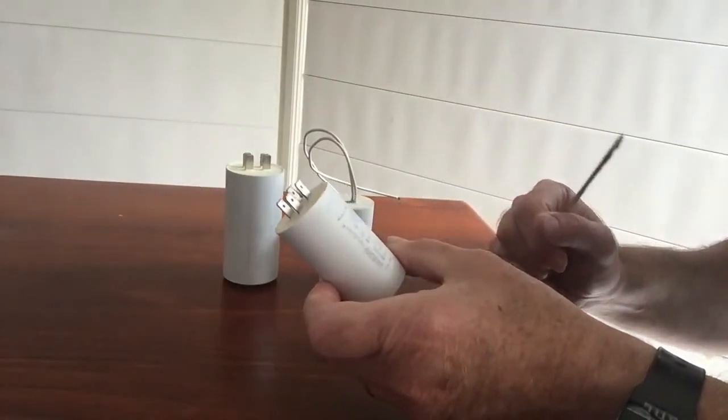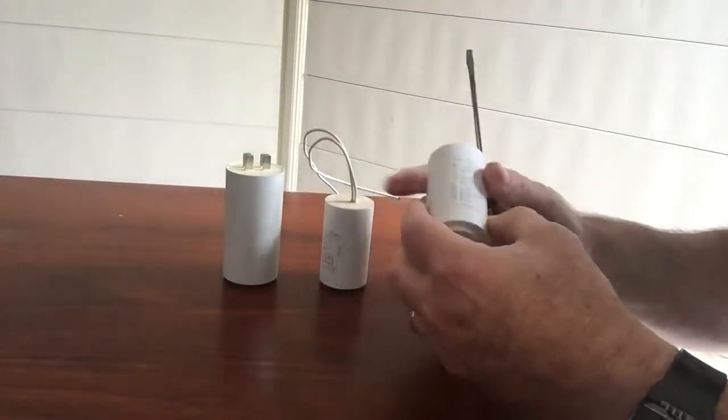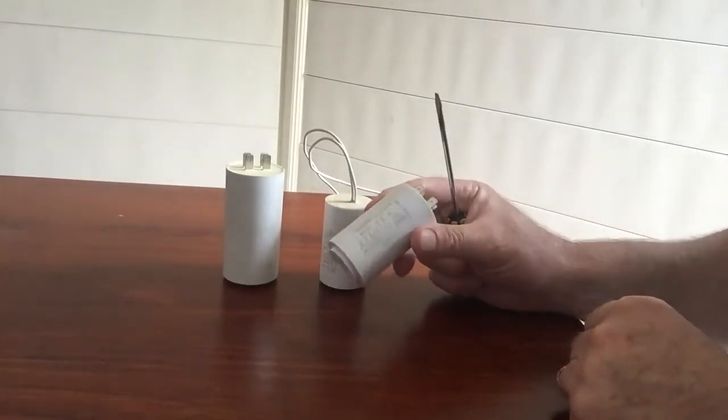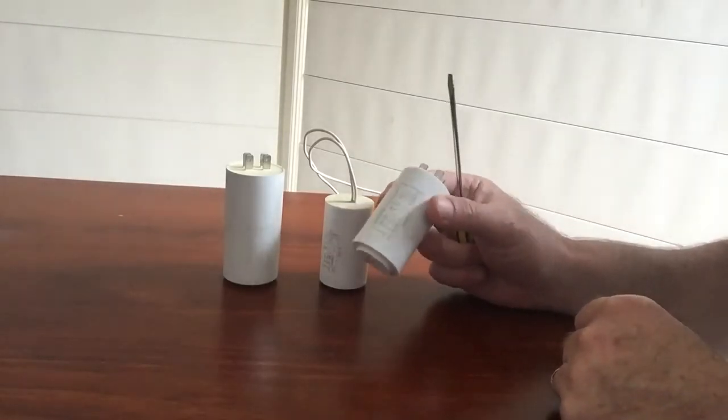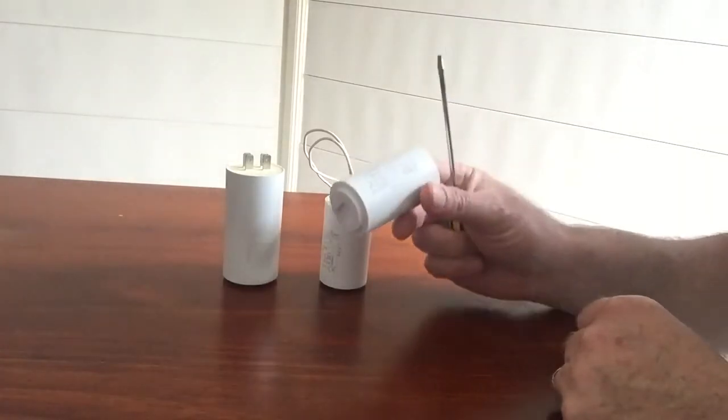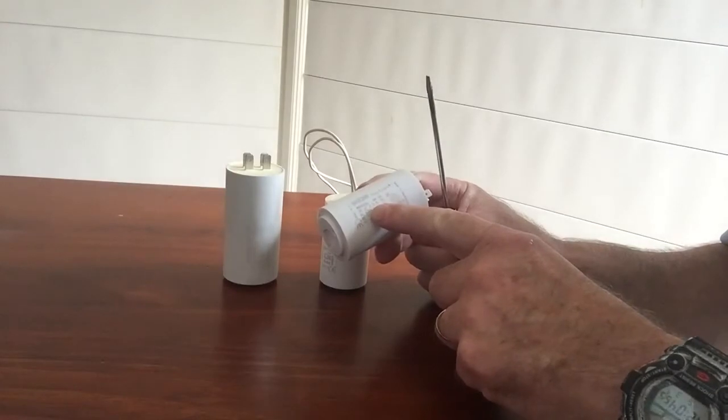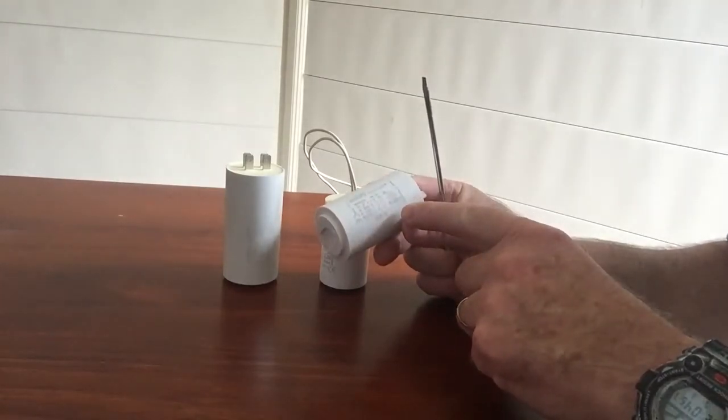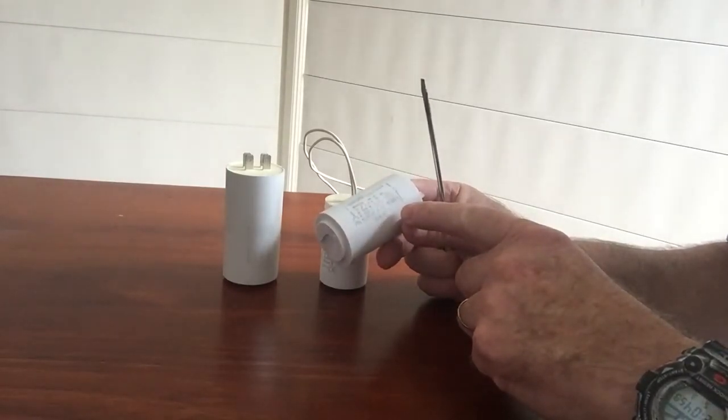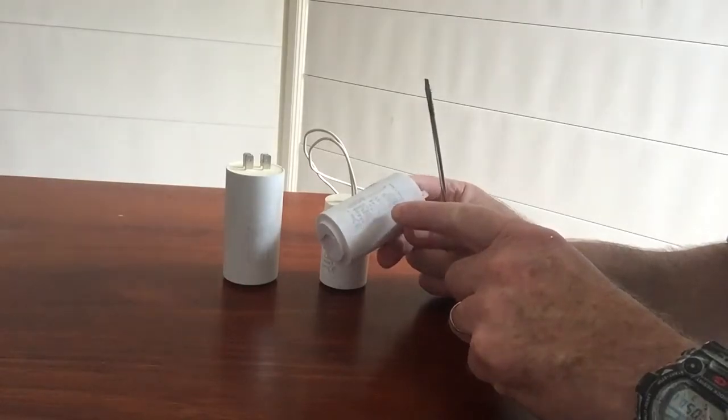Now there's a fair range of capacitors that can go in pool pumps. These are the common style - this is a 20 microfarad. Microfarad is shown by the symbol UF on the capacitor. The most important thing when you're replacing a capacitor is to look for the size. This one is 20 UF, which stands for 20 microfarad.